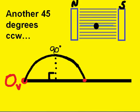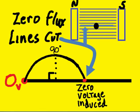Another 45 degrees counterclockwise, and look at the voltage — zero flux lines are cut and zero voltage is induced.